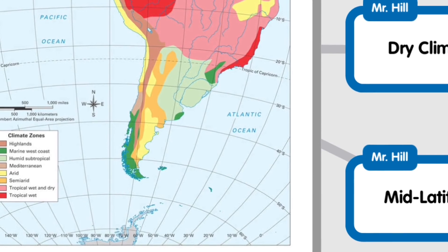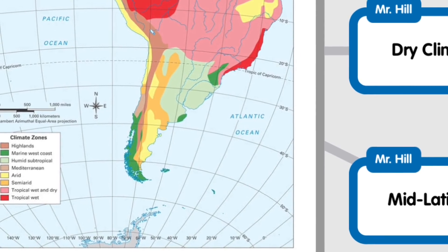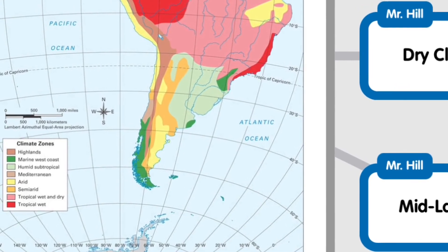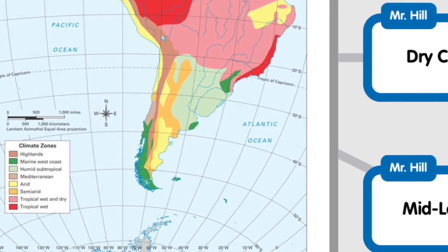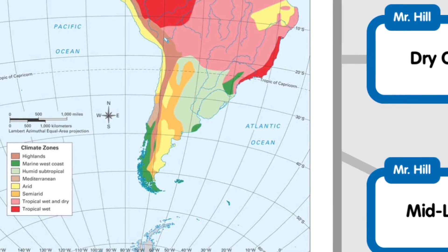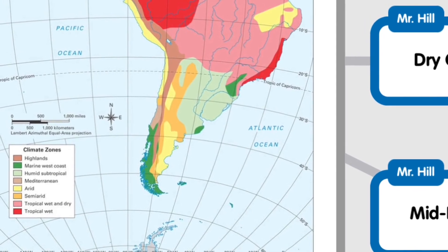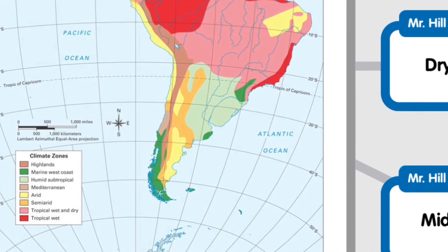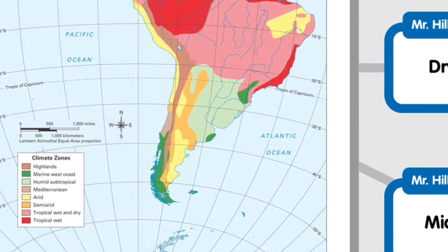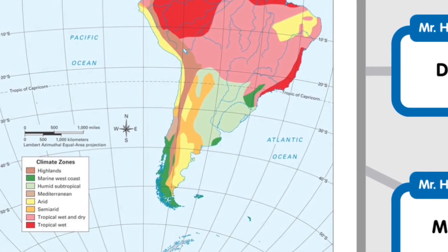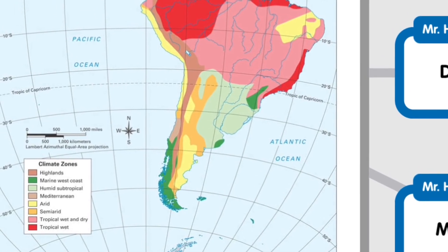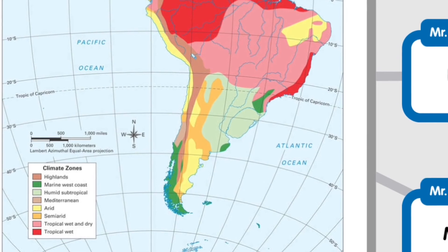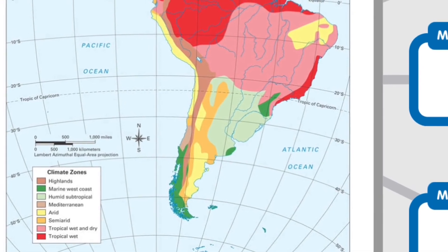Then you've got the highland zones. This is the climate zone covering the most area because of elevation. It's moderate to cold depending on your elevation — the higher up you go, the colder it gets, and the lower you go, the warmer it gets. You're going to see this in the mountains of Mexico and South America.